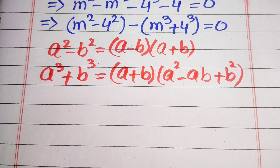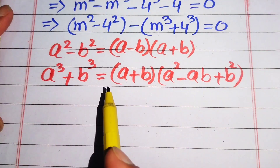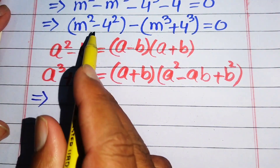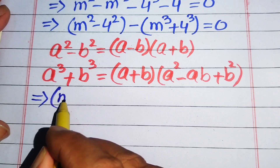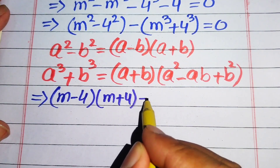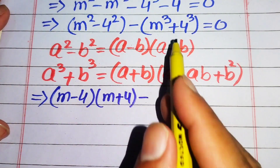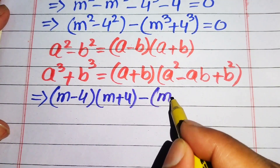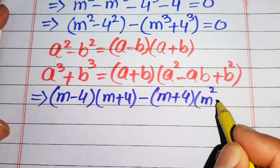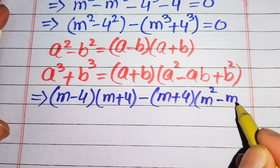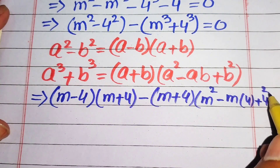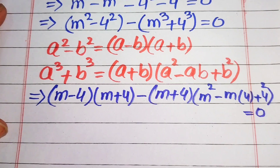Now we apply these formulas to our equation. First, using the square identity, m squared minus 4 squared becomes m minus 4 times m plus 4. Then, using the cubic identity, m cubed plus 4 cubed becomes m plus 4 times m squared minus 4m plus 4 squared. This whole equation equals 0.